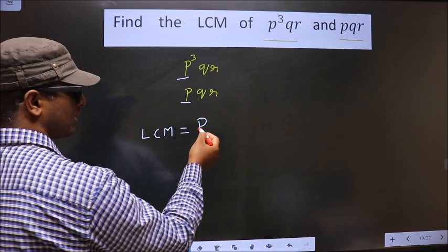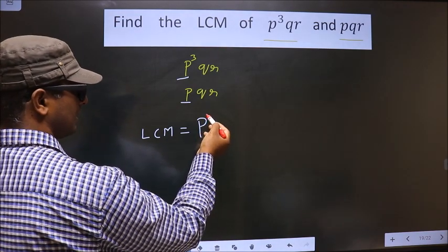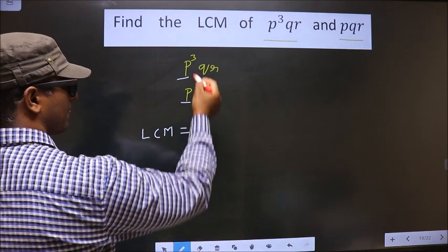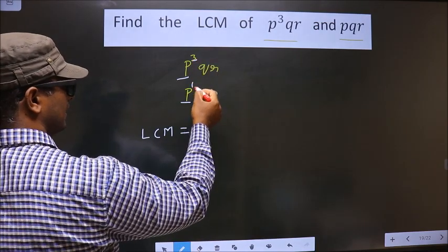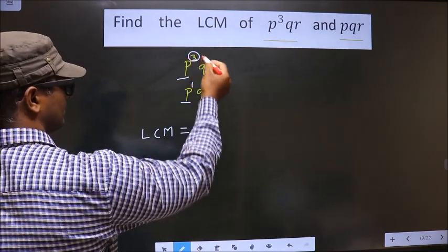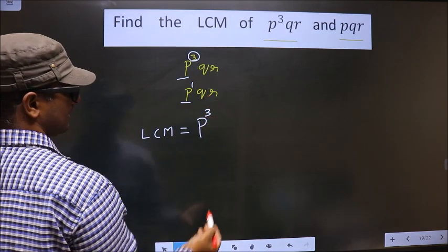Now question arises what power will this P take? It will take the larger power. Here the power is 3, here it is 1. Larger is 3. So here it will take 3.